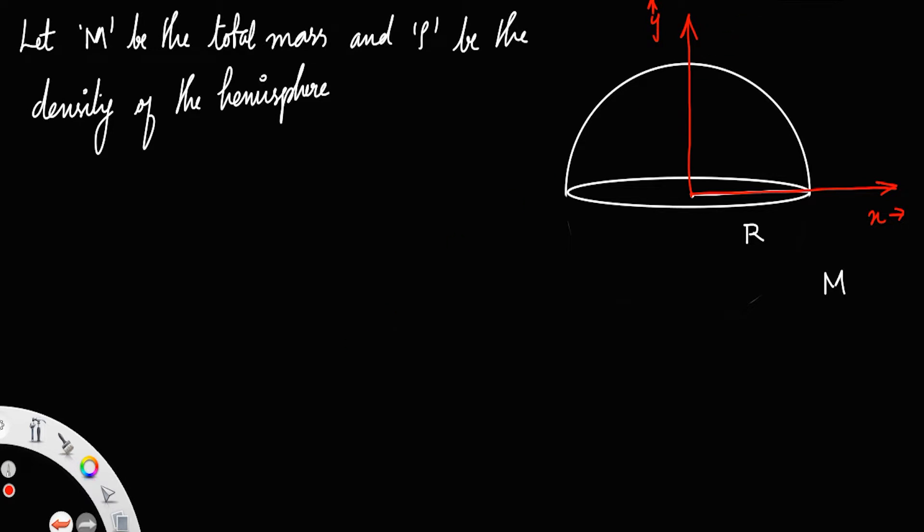Let us consider a small circular portion on the sphere at a distance, let this distance be y units and let the thickness of that circular portion be dy.